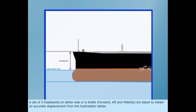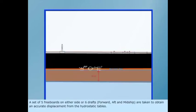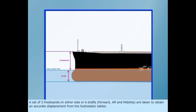A set of 5 freeboards on either side or 6 drafts forward, aft and midship are taken to obtain an accurate displacement from the hydrostatic tables.